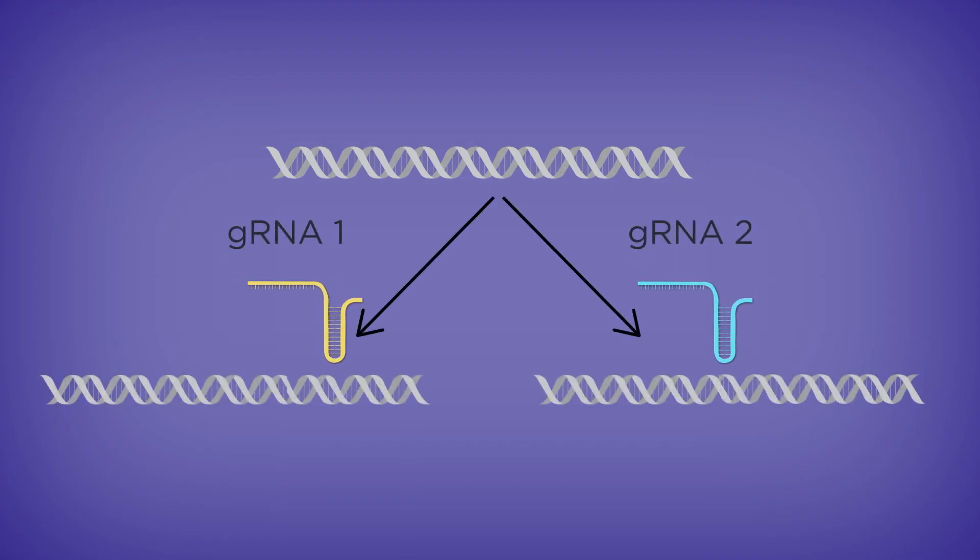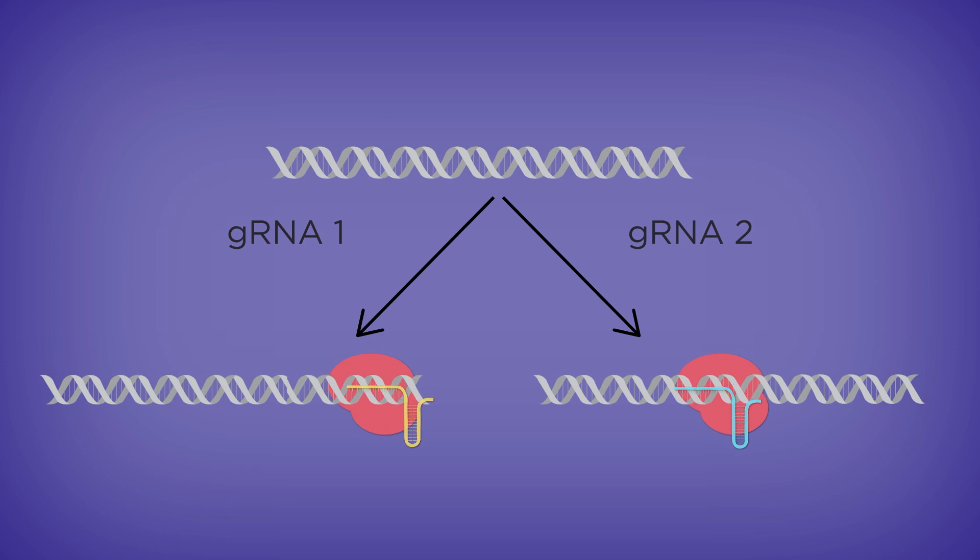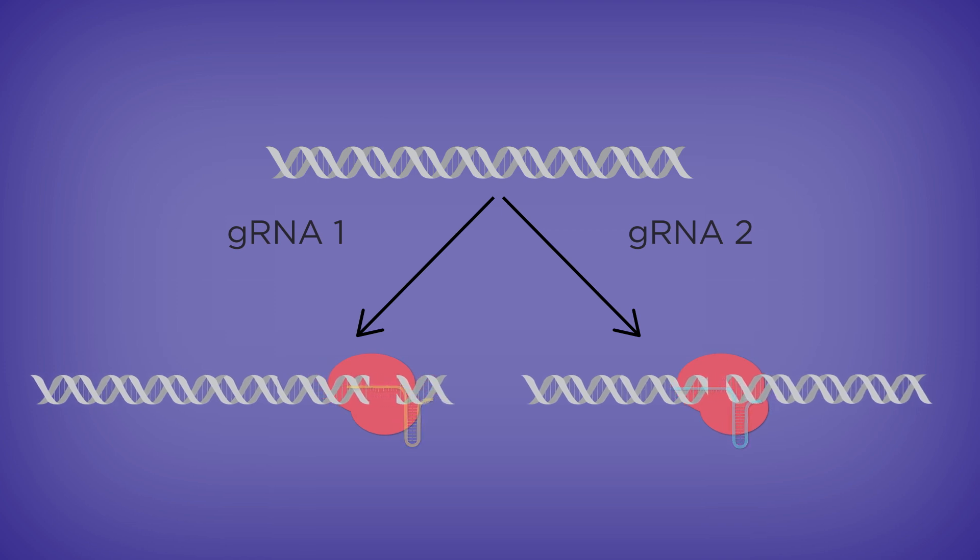In the CHOP lab, you'll get to test out the gene modifying power of the CRISPR-Cas system by targeting and cutting a DNA sample at two locations using two different guide RNAs.